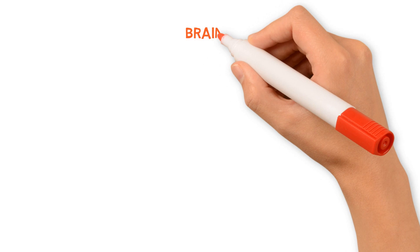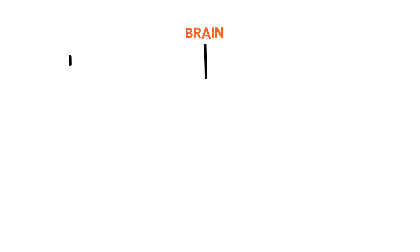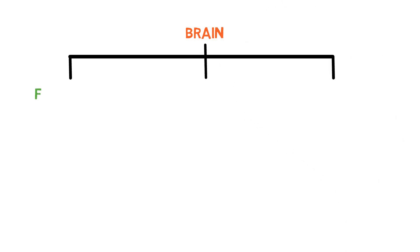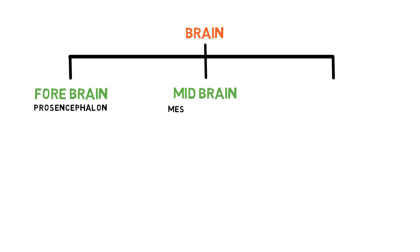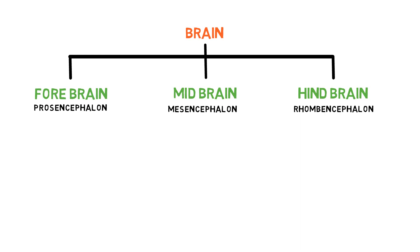The brain is divided into three parts. These are forebrain, also called prosencephalon, midbrain also known as mesencephalon, and the hindbrain which is also referred to as rhombencephalon.